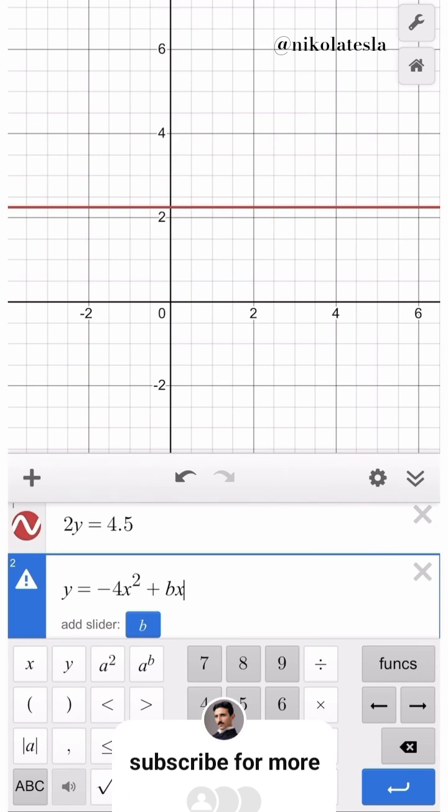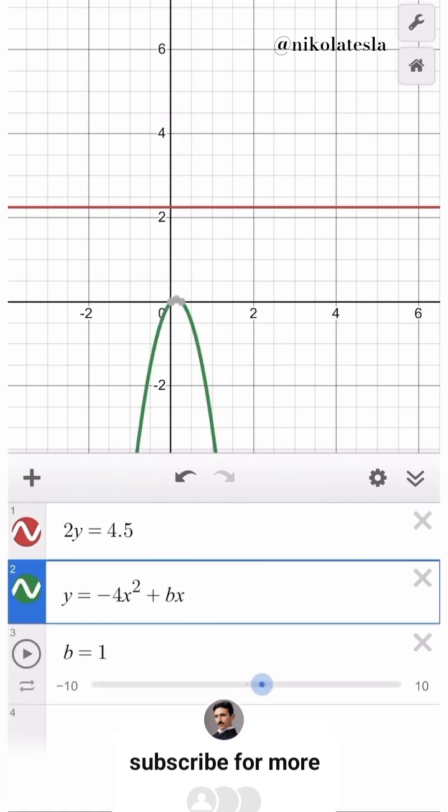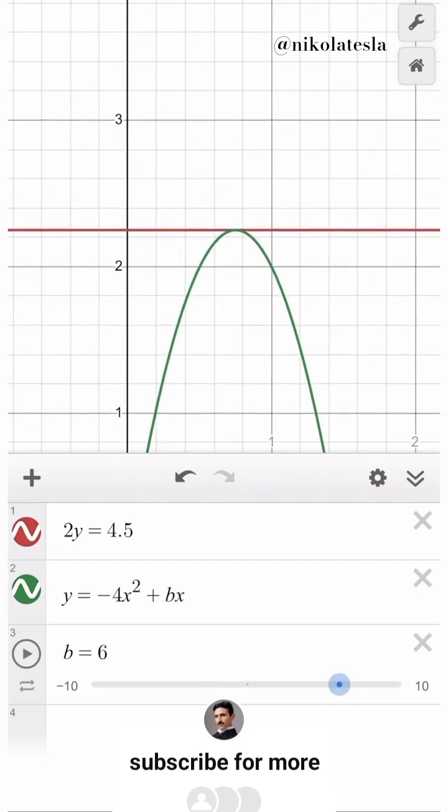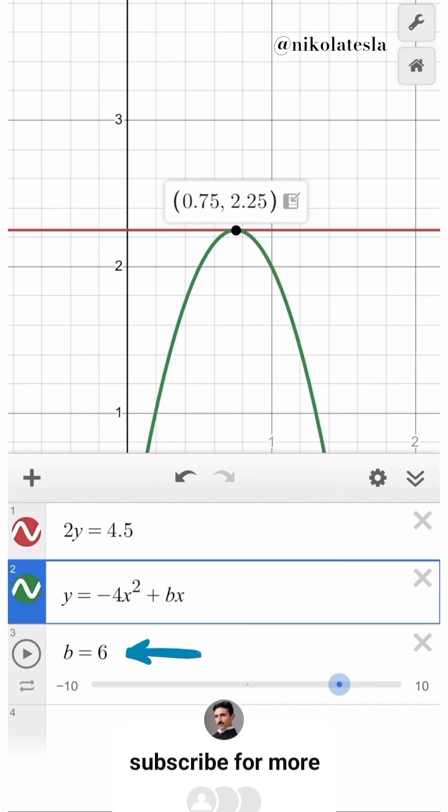And then b becomes a slider, and we can change the value of b and observe the parabola changing. We want the value that leads to one intersection only, so this will be right there. Zooming in, we confirm that it's one intersection only, so b is indeed 6, confirming our earlier solution.